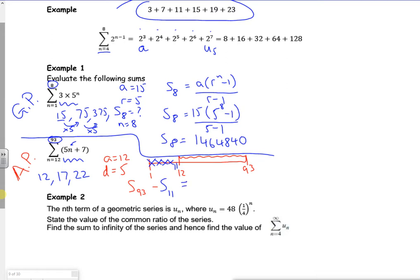So if I use the equations, it's an AP, so it's n over 2, so 93 over 2, 2a, 2 lots of 12 plus 92 lots of 5. So that's your sum. Take away the sum of your first 11, because I want to count from my 12th number. So 11 over 2, 2 lots of 12 plus 10 lots of 5. Oh, that should be a 93 there, shouldn't it? 93 there. There, so that's a 93.